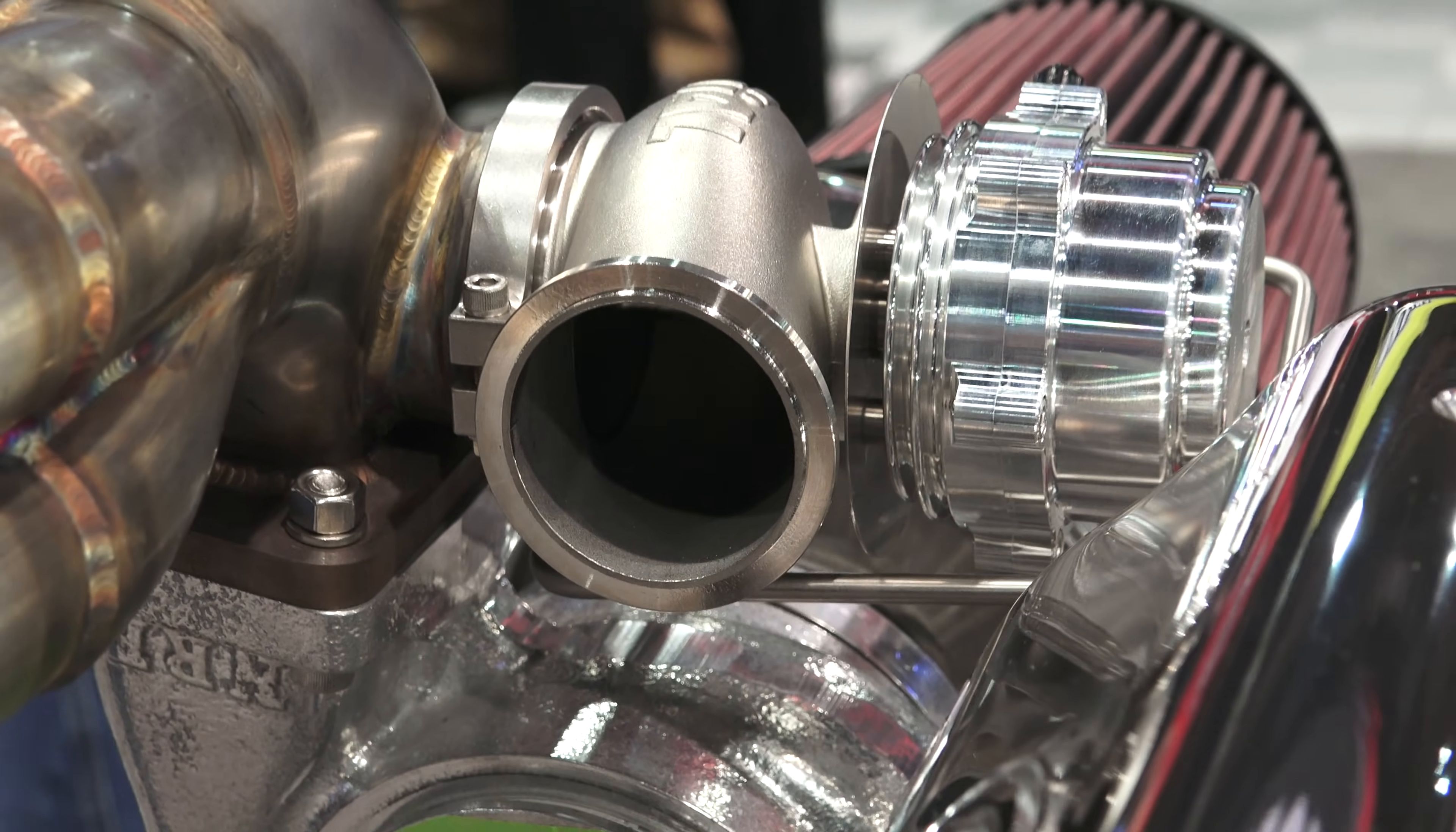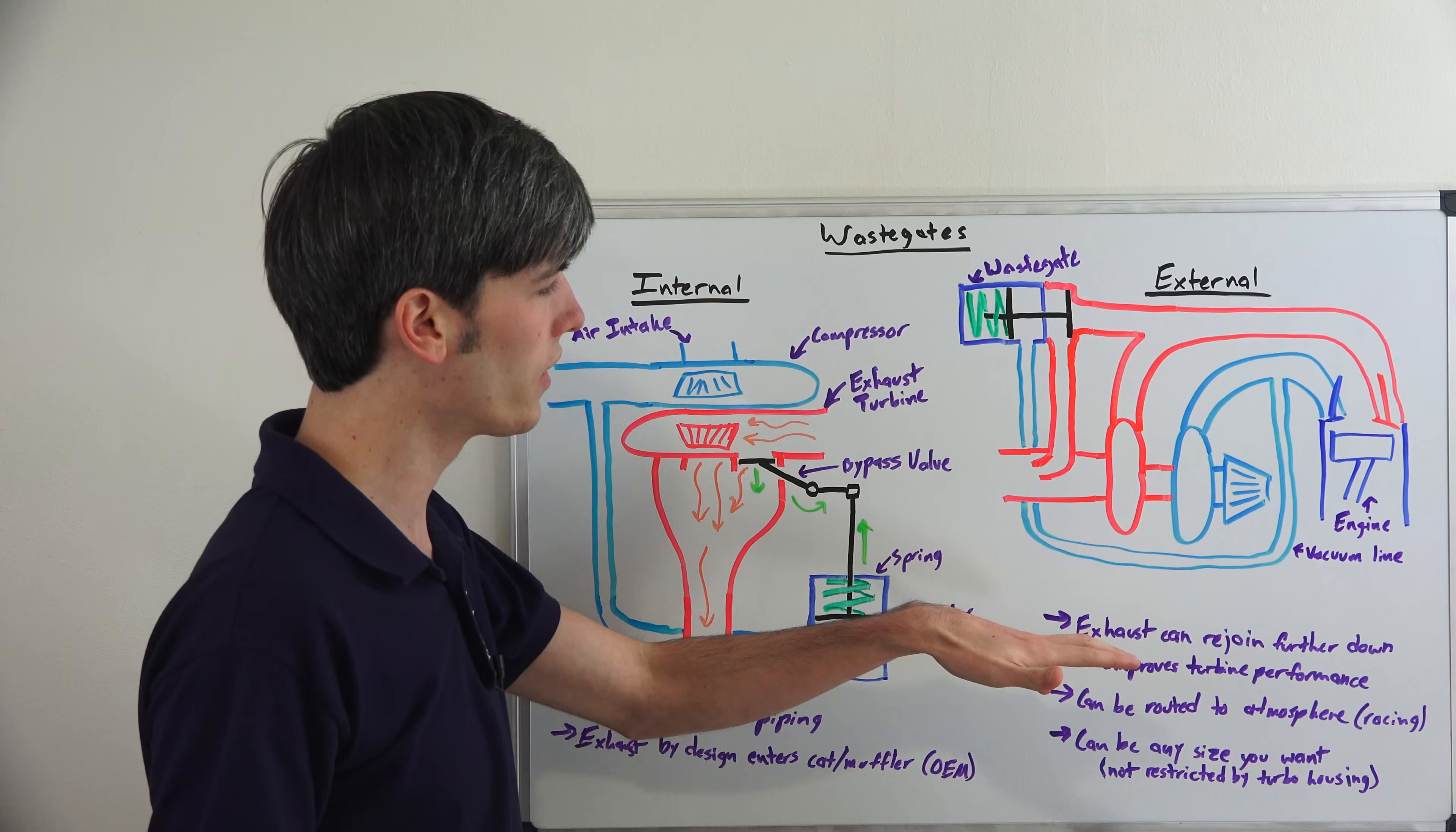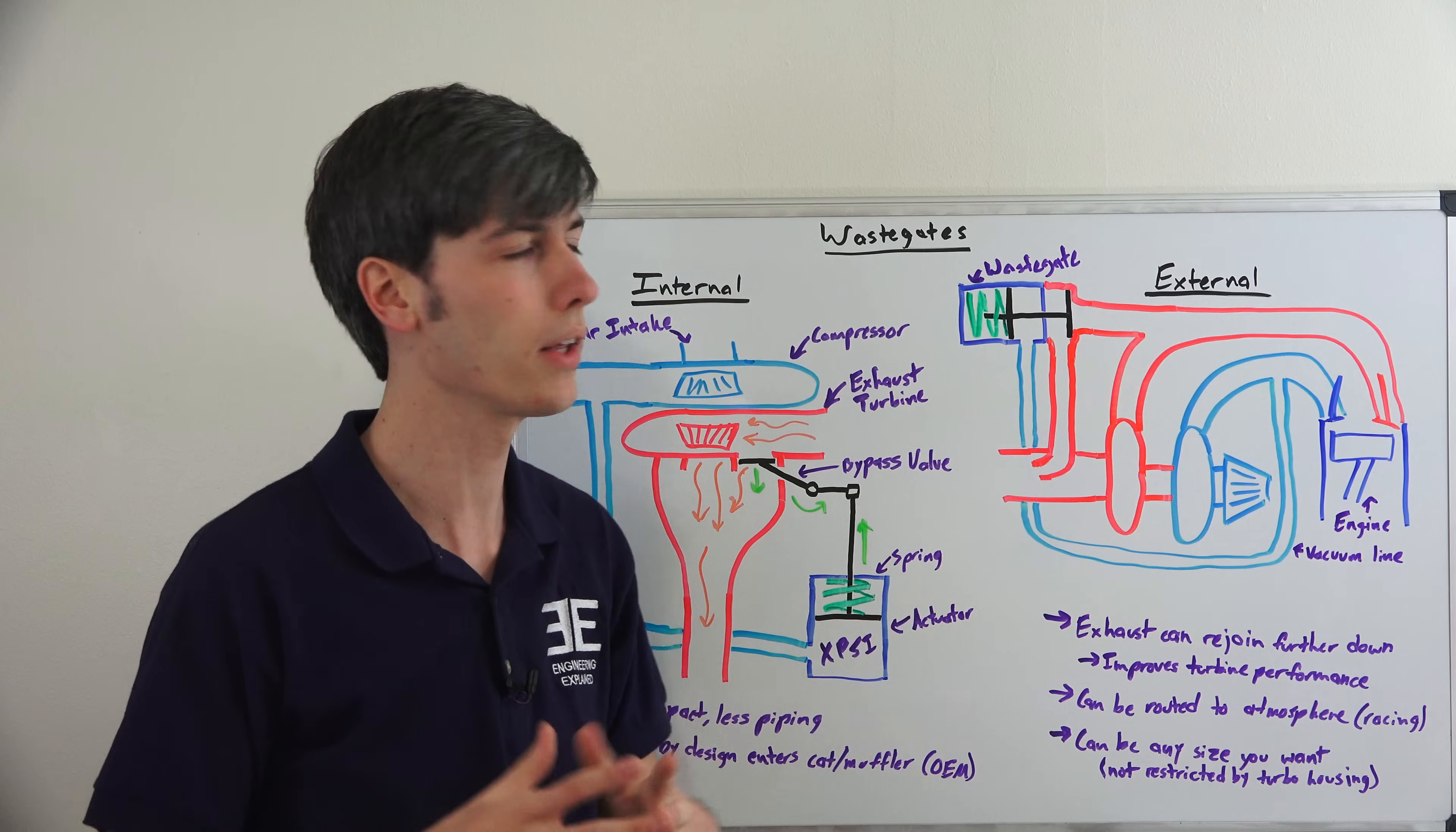So it's doing the exact same thing but there's another way of doing it, which is the external method. You can also just dump this directly into the atmosphere, you don't have to put it right back into the exhaust piping. But the reason you would do something like this with an external wastegate is that you can rejoin the exhaust further down the line. It doesn't have to be right at the turbocharger and this improves the turbine efficiency. So you're going to get more performance out of it and it also could be routed directly to the atmosphere, for example, for a racing application.